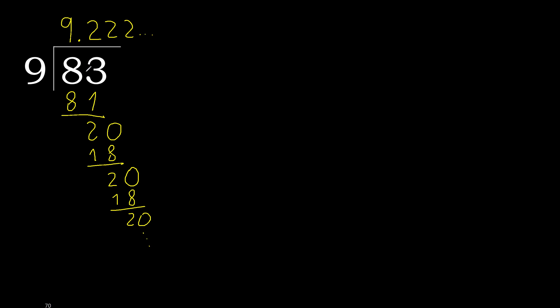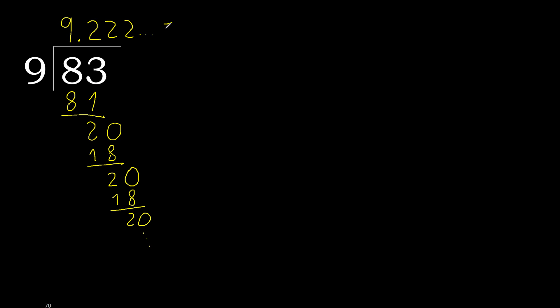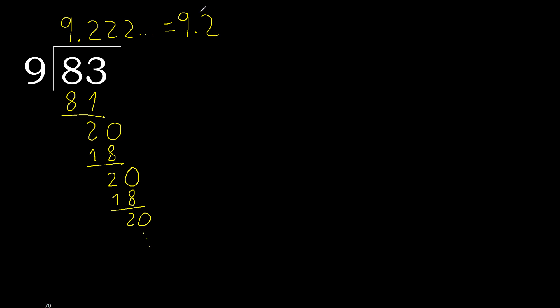OK, finished. 83 divided by 9 equals 9, and after the decimal point, 2 repeating — so the answer is 9.2 repeat, like this: 9.2̄.